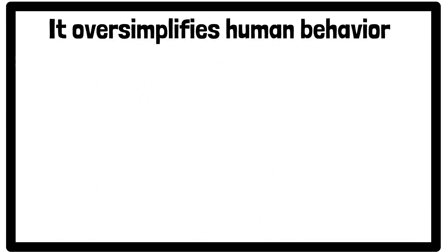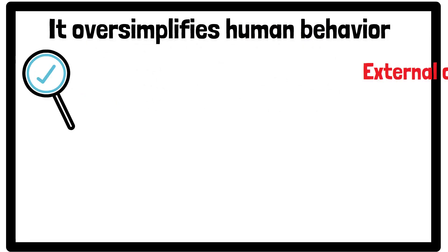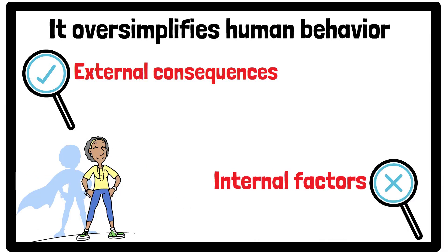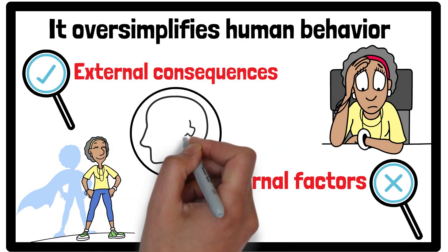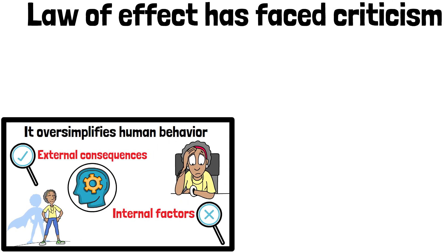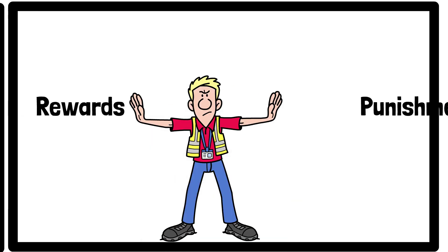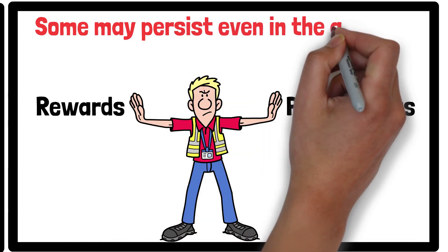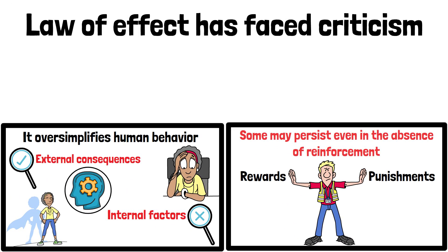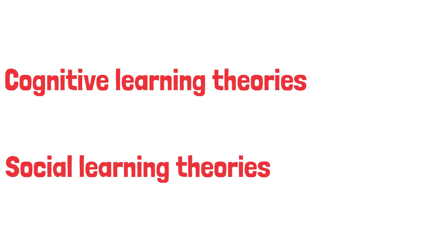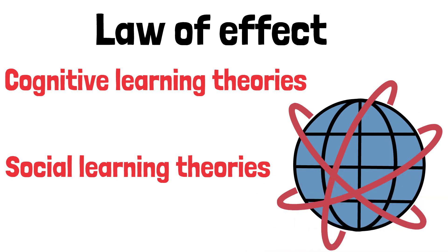Despite its strengths, the law of effect has faced criticism. Some argue that it oversimplifies human behaviour by focusing solely on external consequences and neglecting internal factors such as motivation, emotions, or cognitive processes. Additionally, critics point out that not all behaviours are influenced equally by rewards or punishments, and some may persist even in the absence of reinforcement. Modern theories of learning, such as cognitive and social learning theories, have expanded upon the law of effect by incorporating these additional dimensions.